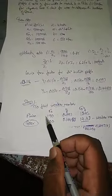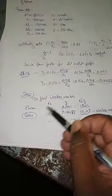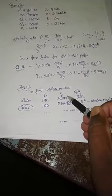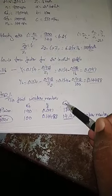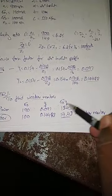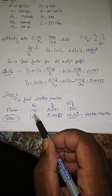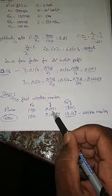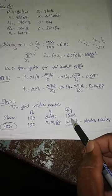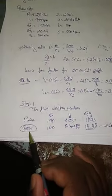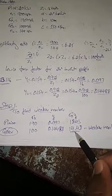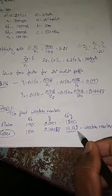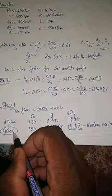Step 1: Finding the weaker member. Comparing sigma × Y for pinion and gear: Pinion — sigma_01 = 190 MPa, Y1 = 0.097, product = 18.43. Gear — sigma_02 = 100 MPa, Y2 = 0.14488, product = 14.48. Since 14.48 is the lower value, the gear is the weaker member, so the design will be based on the gear.